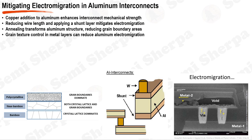Aluminum annealing is another effective method to improve electromigration resistance. This thermal process increases grain size, reducing the number of grain boundaries, and can result in a bamboo-like structure where grain boundaries are perpendicular to current flow — with fewer transverse grain boundaries, there are fewer paths for electromigration. The orientation or texture of the metal layers also influences electromigration; for example, a Ti-002/TiN-111 stack enhances grain uniformity, further reducing susceptibility. Through these techniques — copper doping, wire length reduction, shunt layers, annealing, and grain texture control — the impact can be substantially reduced.